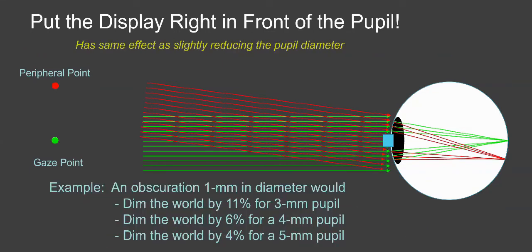So just as an example, let's suppose that the display was a millimeter in diameter and you put it right in front of a three millimeter diameter pupil. It's going to block one ninth of the light, which is 11%. If your pupil were four millimeters, you'd block 6%. If your pupil were five millimeters, you'd only block 4%.